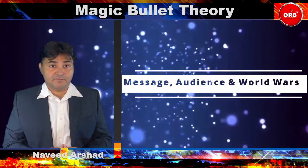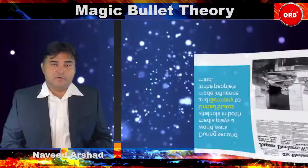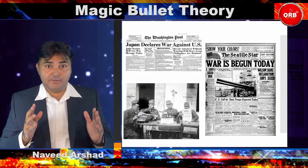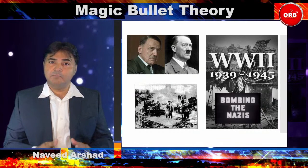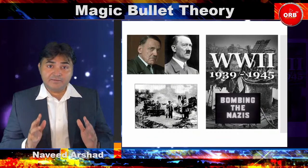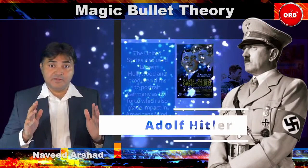First, have a look at how messages were sent to the audience during world wars. During World War II, Germany and the United States used their film industries to build negative propaganda against each other. They produced numerous films in which they manipulated facts to make their audience believe that the other side was wrong or bad.